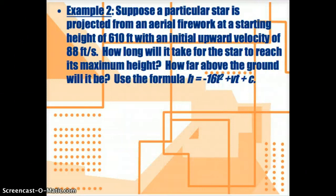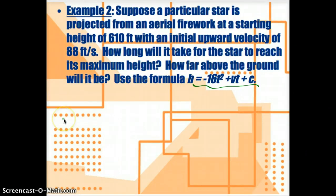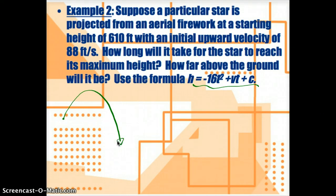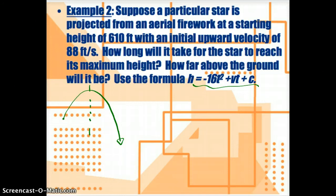Let's think about a word problem. Suppose a particular star is projected from an aerial firework at a starting height of 610 feet with an initial upward velocity of 88 feet per second. How long will it take for the star to reach its maximum height, and how far above the ground will it be? We're given a formula for this. The star gets projected and comes back down — you're looking for its maximum height. I hope you notice that the maximum height is going to be at the vertex, because it's going to look like a parabola.